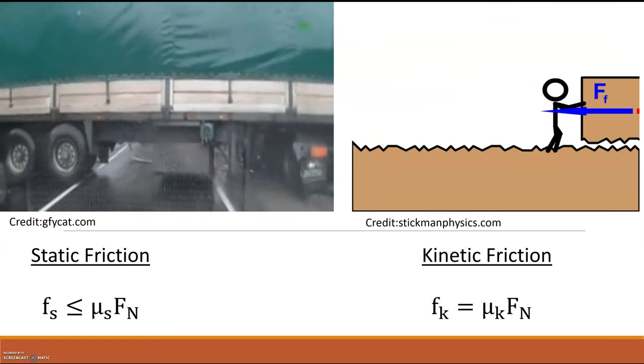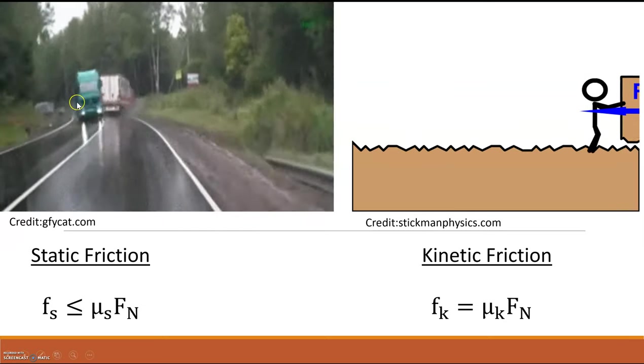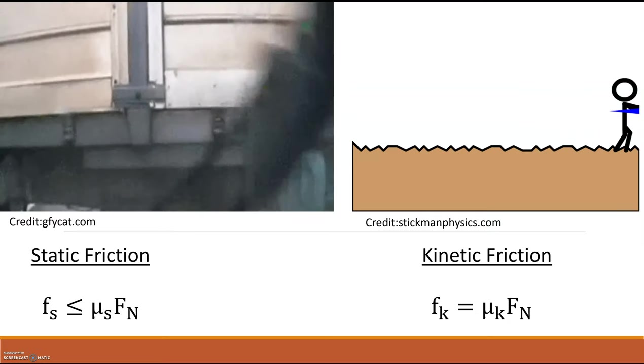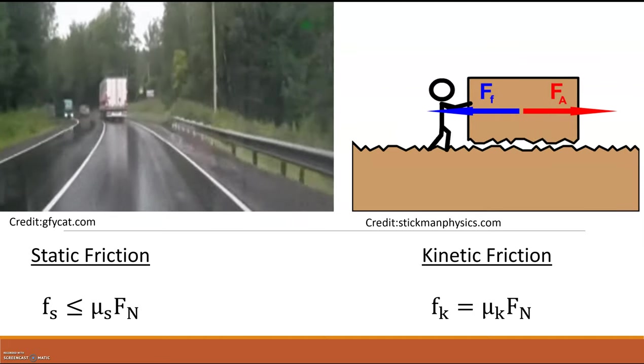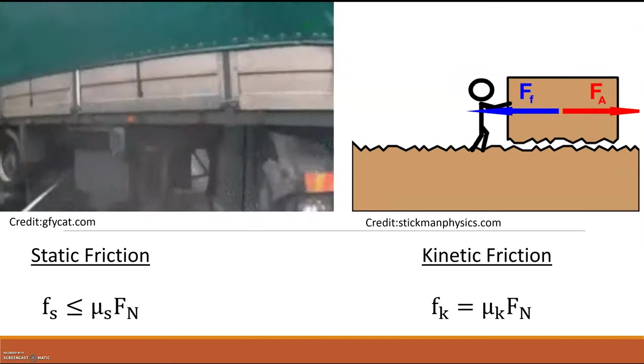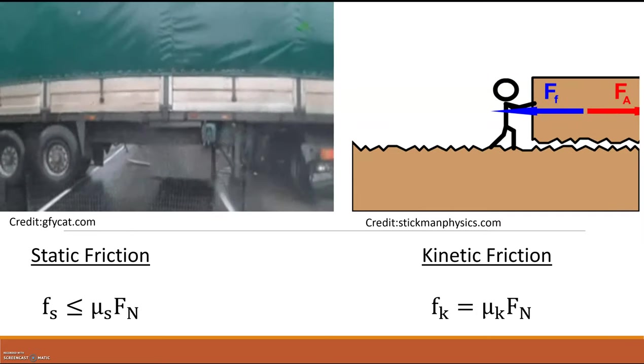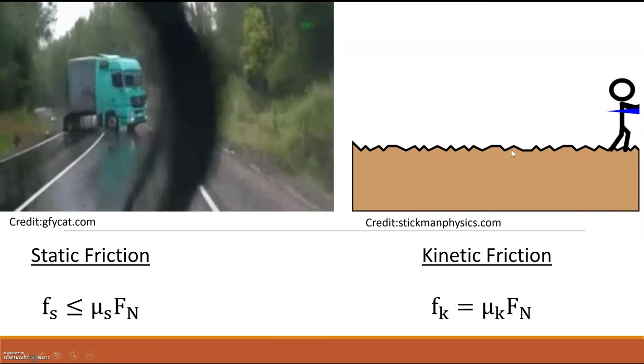Kinetic friction requires your object to move relative to the surface. As you're driving along, the point on your tire and the point on the ground don't move relative to each other. But as the truck starts to slide, now the point on the ground and the point on the tire are moving relative to each other and you're turning into kinetic friction.